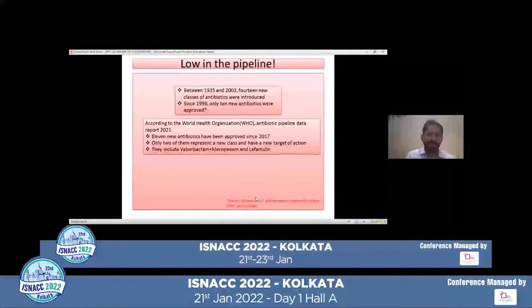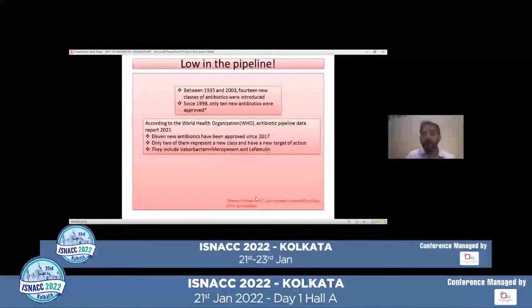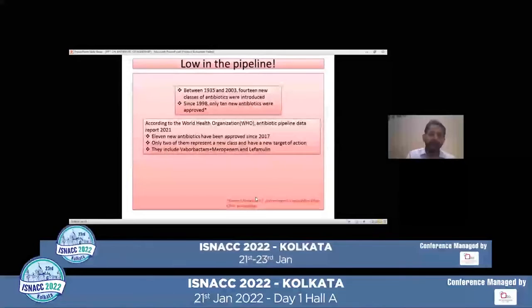Why are we worried? Because there are very few antibiotics in the pipeline. According to the World Health Organization antibiotic pipeline data report of 2021, only 11 new antibiotics have been approved since 2017. Only two of them represent a new class and have a new target of action. Basically, all of those are modifications of existing antibiotics, and the new antibiotics include cefiderocol, meropenem combinations, and the plazomicin family.